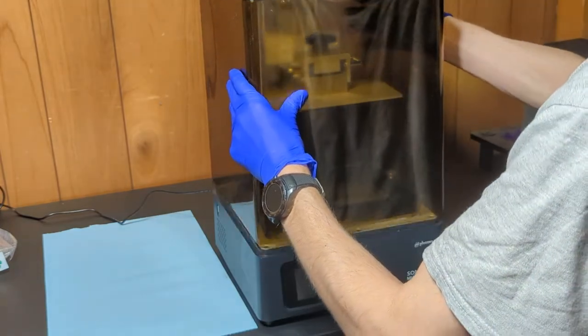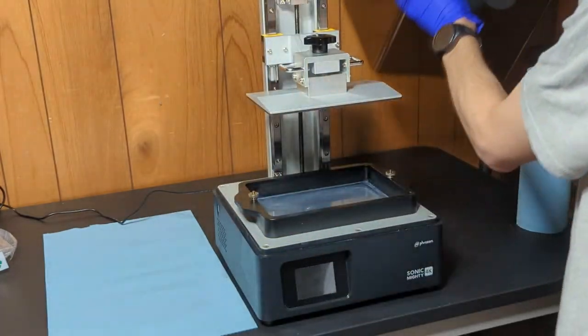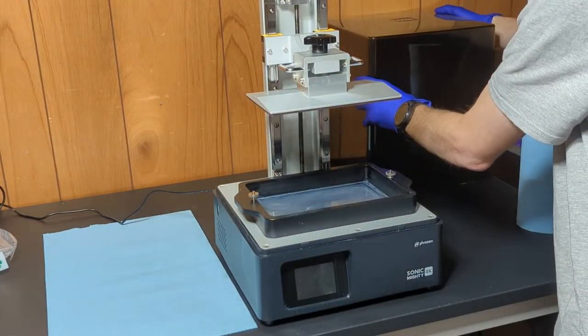Today I'm going to show you how to replace the LCD screen and VAT film on the Frozen Sonic Mighty 4K printer.